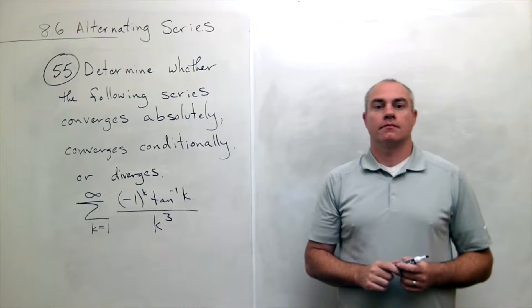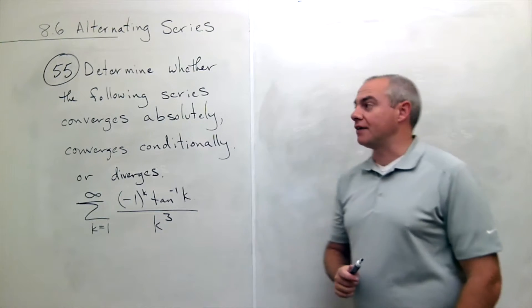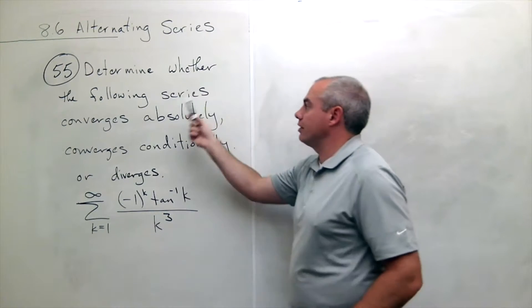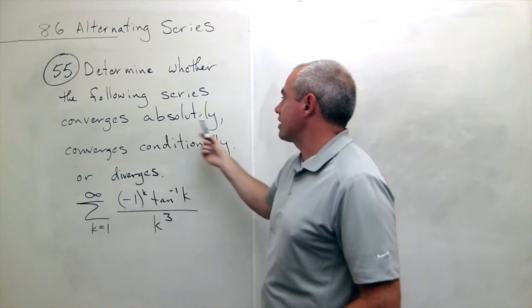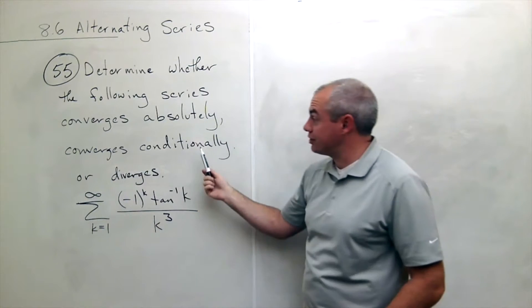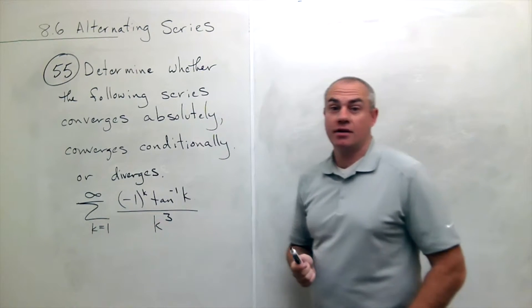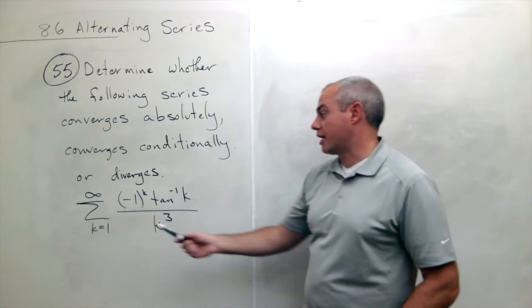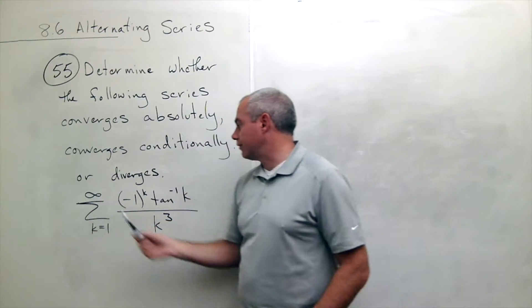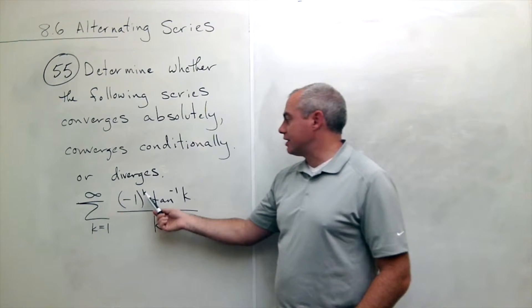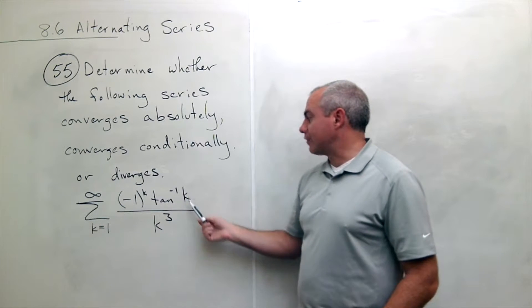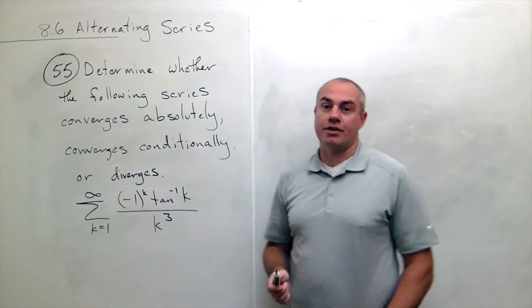I'm the calculus professor, and today I'll be talking to you about alternating series. In problem number 55, we'd like to determine whether the following series converges absolutely, converges conditionally, or diverges. And here's the series we'd like to look at. We'd like to look at the sum k going from one to infinity of negative one to the k times tan inverse k over k cubed.